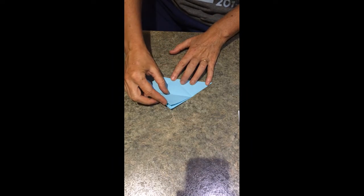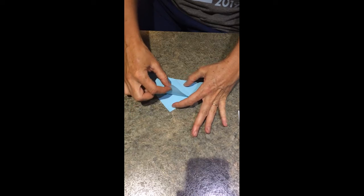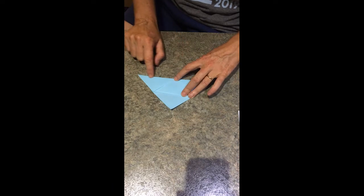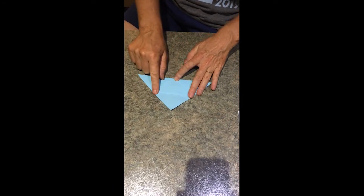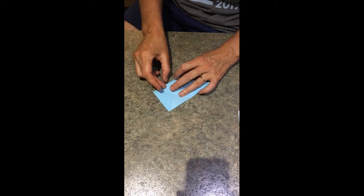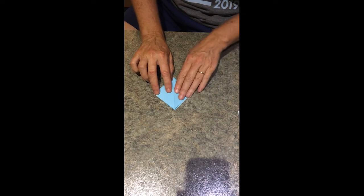The second step is to take the top layer and bring the triangle down in a point to meet your bottom fold. Then you're going to bring the right over, the left over, doesn't matter which order.